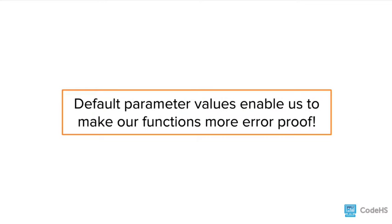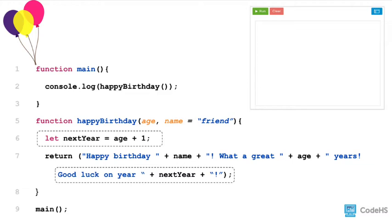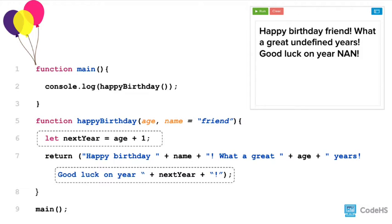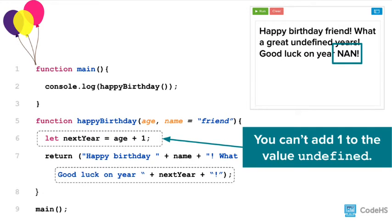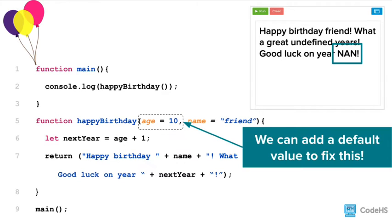One last important note about default values: default values enable us to make our functions more error proof. Let's go back to our happy birthday program one last time. We've added a line that adds one to the variable age so that we can add a line about the upcoming year. When we run this program without passing in any arguments, we get NaN printed to the console. NaN stands for 'not a number.' We get this value because we can't add one to the value of undefined. JavaScript notes this error by assigning the value NaN. We can fix this by assigning a default value to age — for example, making the default age 10.